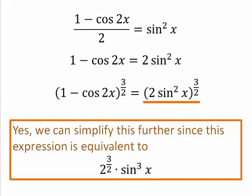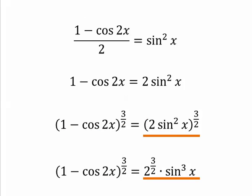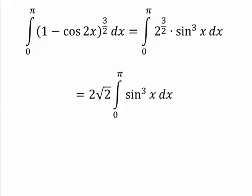So yes, we can simplify this further since this expression is equivalent to 2 to the 3 halves times sine cubed of x. And so we make that substitution. All right, so instead of the integral of 1 minus cosine 2x to the 3 halves, we're now doing the integral of 2 to the 3 halves sine to the 3. I brought the 2 to the 3 halves to the outside and rewrote it as 2 radical 2.